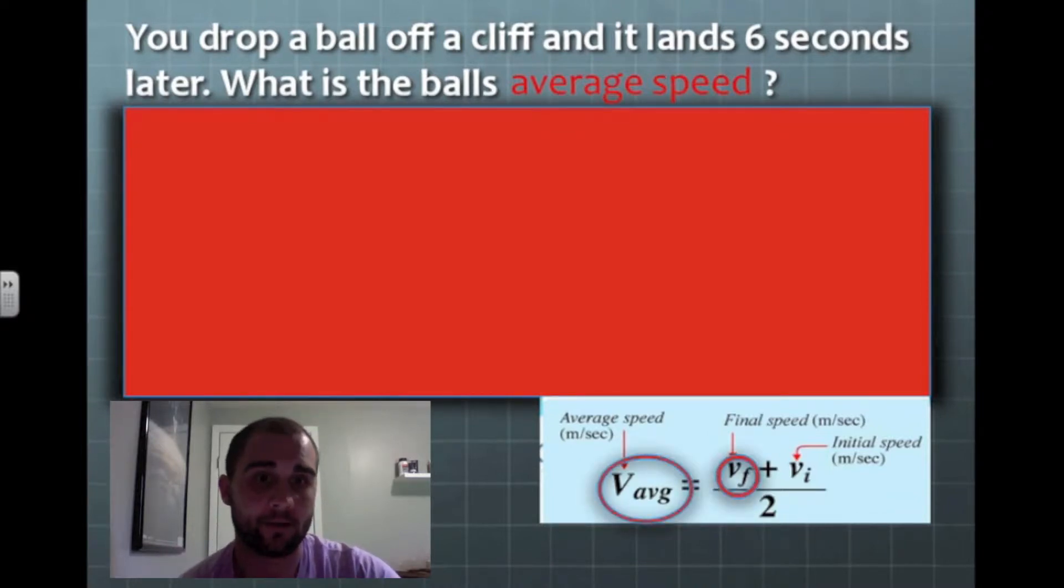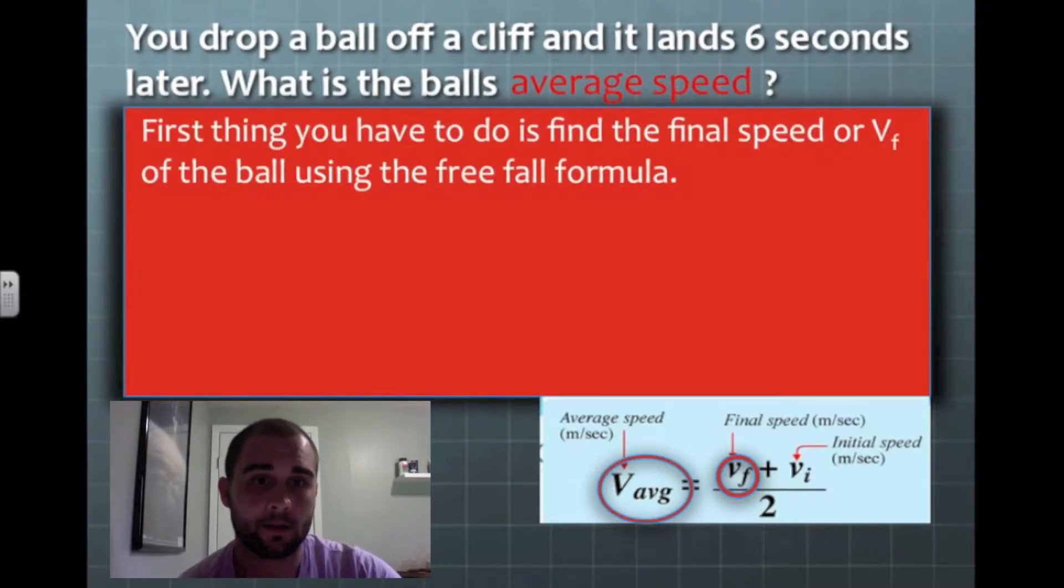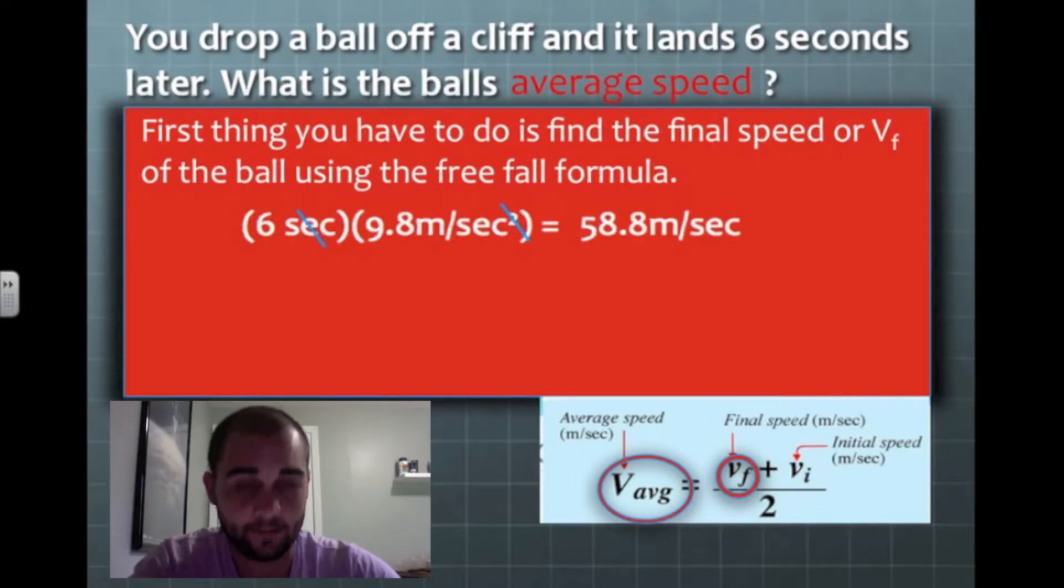I have to figure out my final speed first. So I'm going to use the free fall formula to do that. Here it is. And when I ran that, I got 58.8 meters per second. That's my final speed. I'm going to put that down.